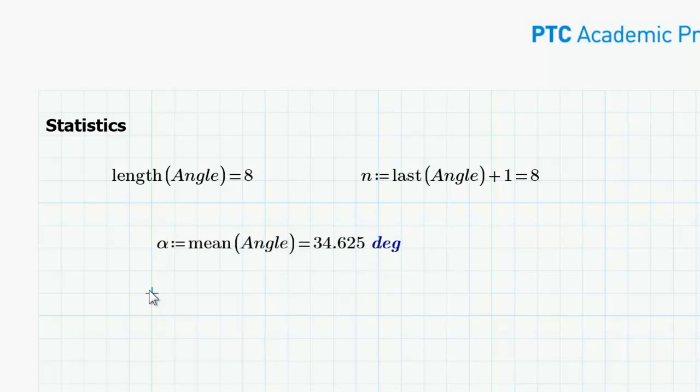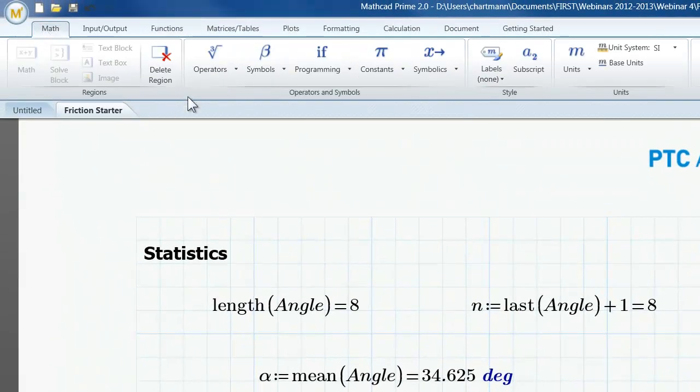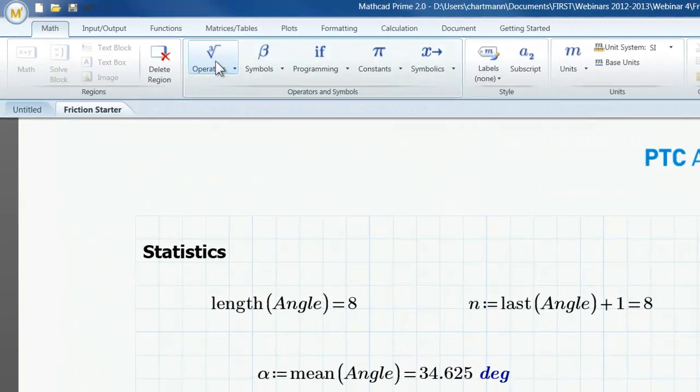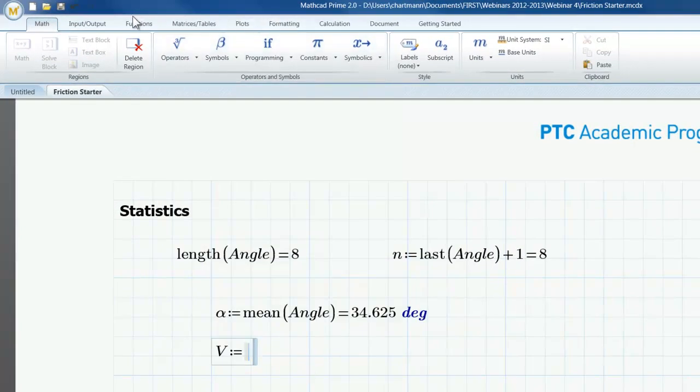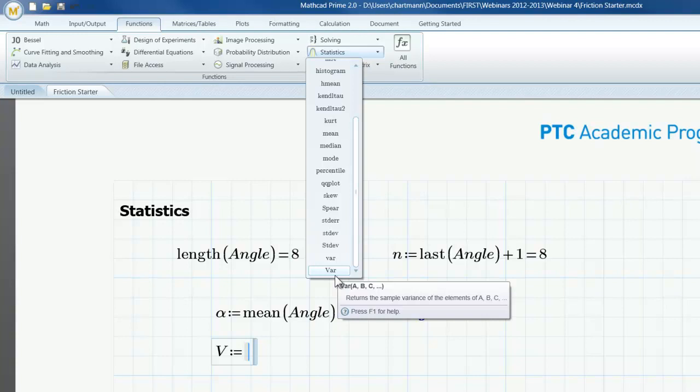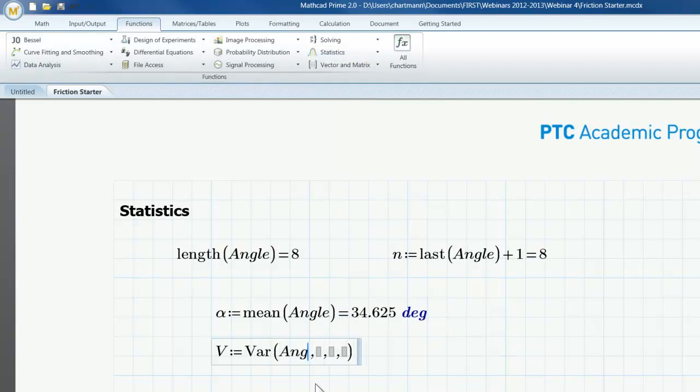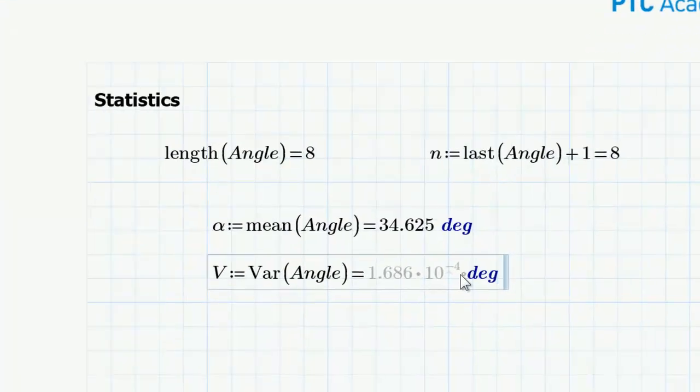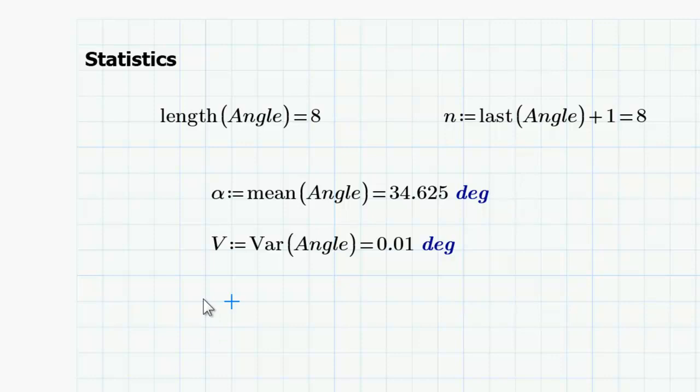Similarly, I want to calculate the variance. I'm going to type a capital V. I'm going to go to math. I'm going to choose a definition operator this time. Insert that. I'm going to go to functions. I'm going to go to statistics. And I'm going to scroll down to the sample variance. And again, I can insert more than one parameter. But I will delete the extras and calculate that variance, which is also coming in radians. So I can convert that to degrees.